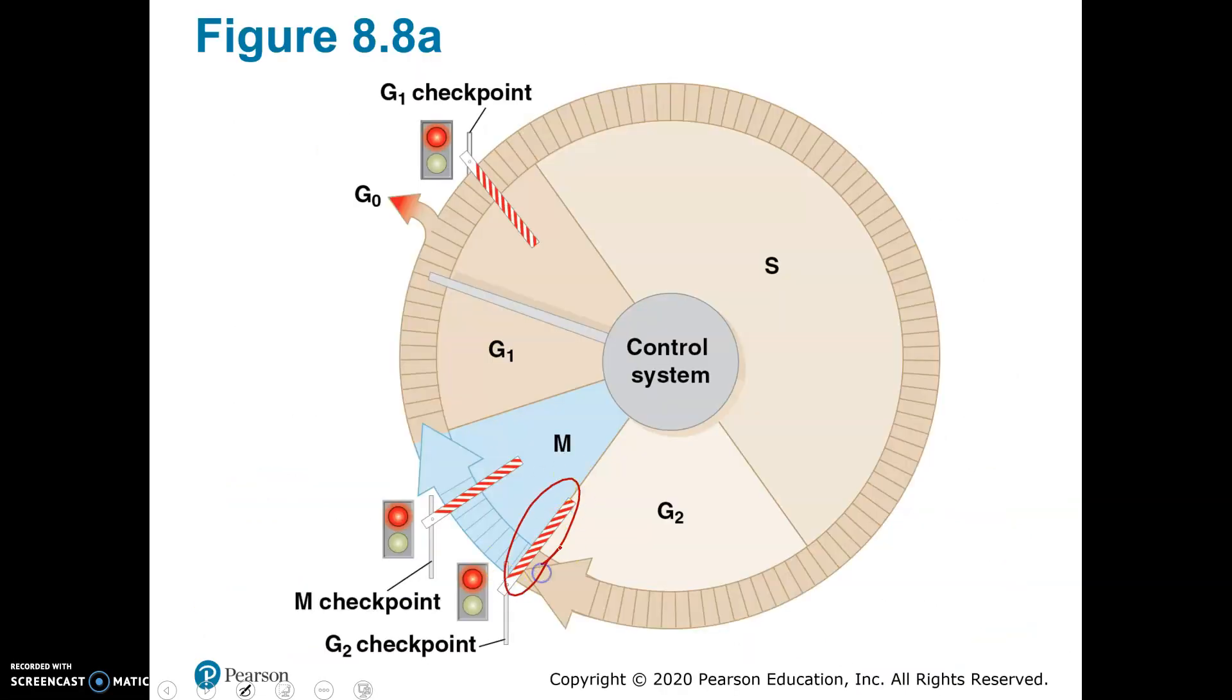And these are some of the checkpoints they're showing you. So if there's a problem with the DNA or something like that, a cell might be told not to go past this point. If more cells are needed, it might tell the cell to progress.